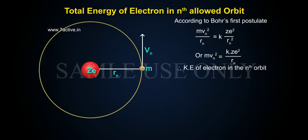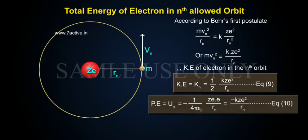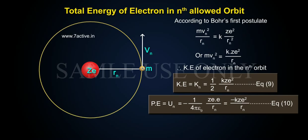Kinetic energy of electron in nth orbit: Kn equals (1/2)·kZe²/rn — Equation 9. Potential energy: PE equals Un equals minus (1/4πε₀)·Ze·e/rn, equals minus kZe²/rn — Equation 10.